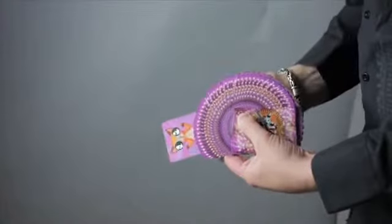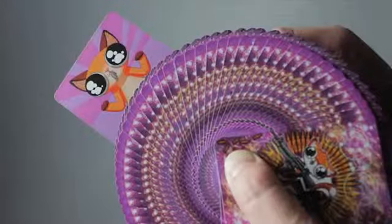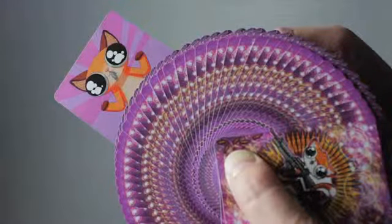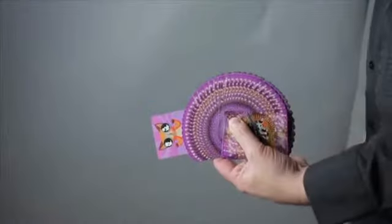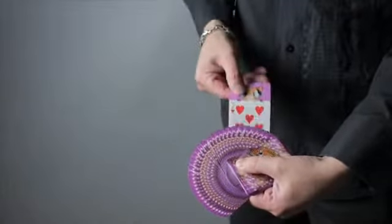You push the kitten into the deck, and when it comes out, it doesn't come out with their card. It comes out with either a mouse or a goldfish in the mouth. Then the cat is pushed back into the fan and comes out the other side with their card.